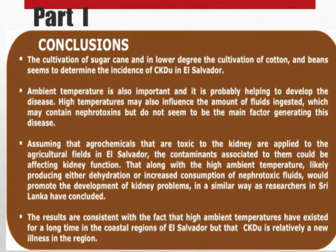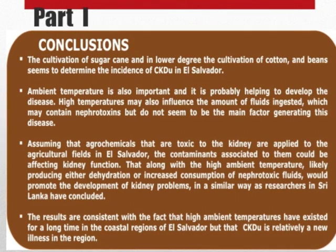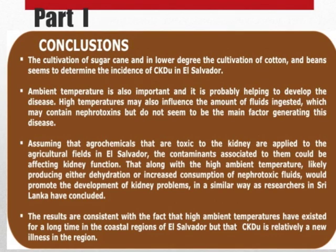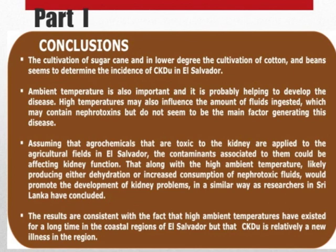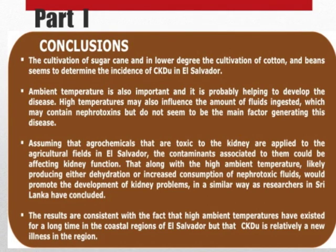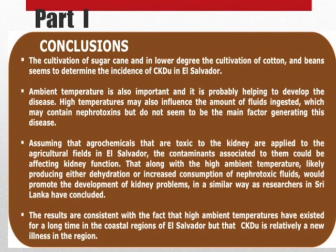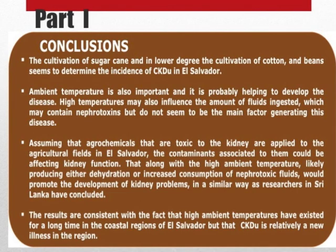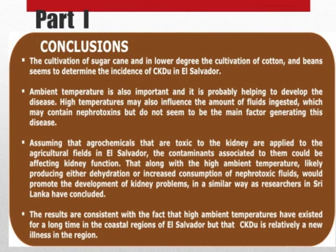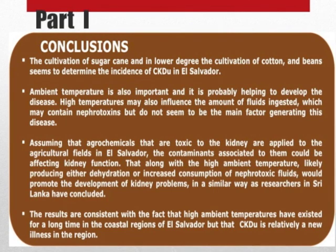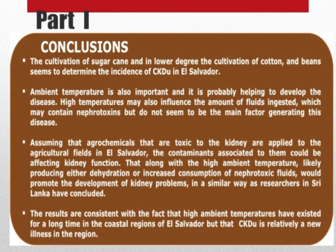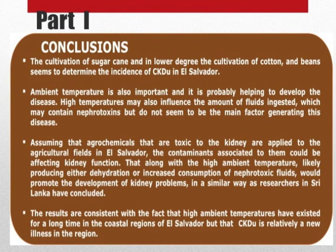In conclusion for this first part, the cultivation of sugarcane, and to a lower degree cotton and beans, seems to determine the incidence of chronic kidney disease of unknown causes in El Salvador. Ambient temperature is also important and is probably helping to develop the disease. High temperatures may also influence the amount of fluids ingested, which may contain nephrotoxins, but do not seem to be the main factor generating this disease. Assuming that agrochemicals toxic to the kidney are applied to agricultural fields in El Salvador, the contaminants associated with them could be affecting kidney function — along with high ambient temperatures likely producing dehydration or increasing consumption of nephrotoxin-containing fluids — promoting kidney problems similarly to what researchers have found in Sri Lanka.